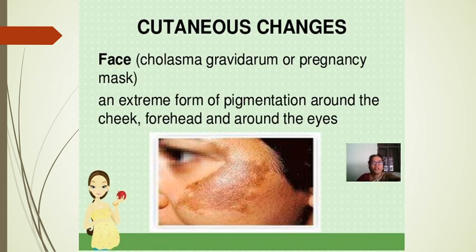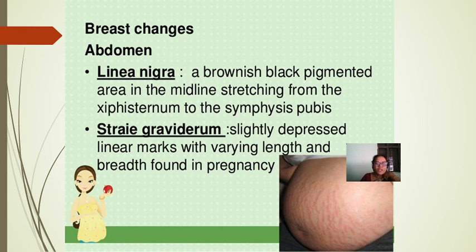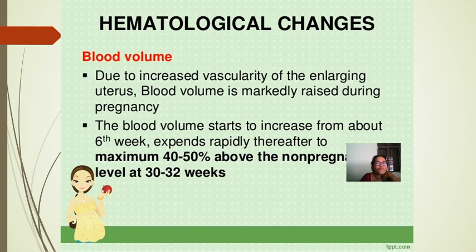Cutaneous skin changes: on the face, chloasma gravidarum (pregnancy mask) appears — an extreme form of pigmentation around the cheeks, forehead, and eyes. On the abdomen, linea nigra is a brownish-black pigmented area in the midline stretching from the xiphisternum to the symphysis pubis. Stretch marks on the abdomen are called striae gravidarum, more visible in multigravida, appearing as the skin becomes stretched.